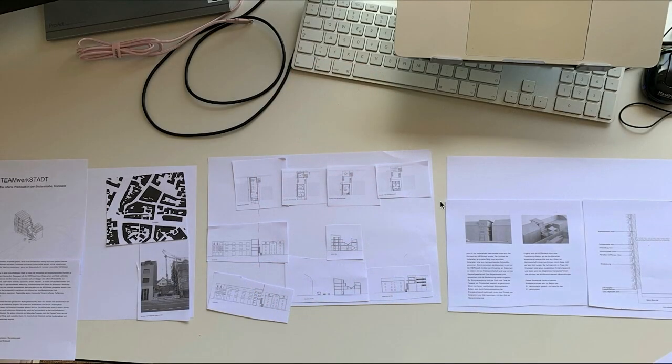Wenn ich anfangen möchte, meinen Plan zu sortieren, empfehle ich, nach einer gewissen Grundordnung den Plan auszudrucken — DIN A4 oder DIN A3 reicht super aus — ihn entsprechend zu zerschneiden und zu versuchen, eine Grundanordnung auf dem Plan zu organisieren. Das hilft tatsächlich extrem. Es geht auch viel schneller als am Computer, und man findet auf die Art und Weise in der Regel eine gute Zuordnung.